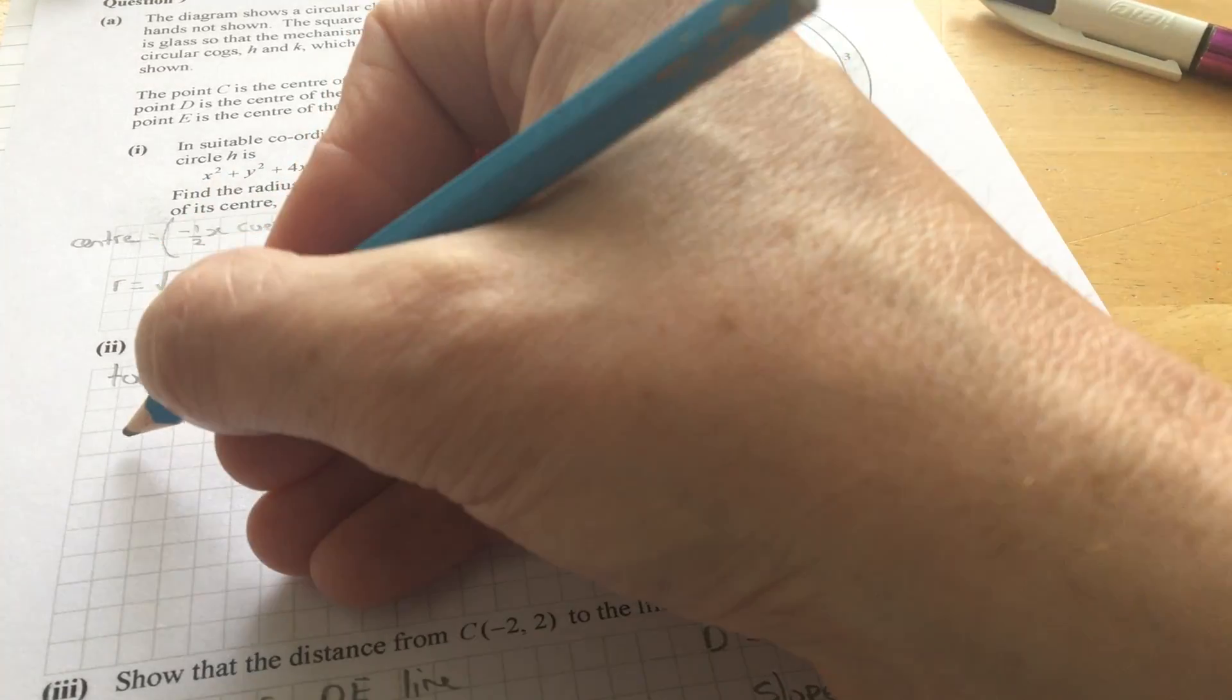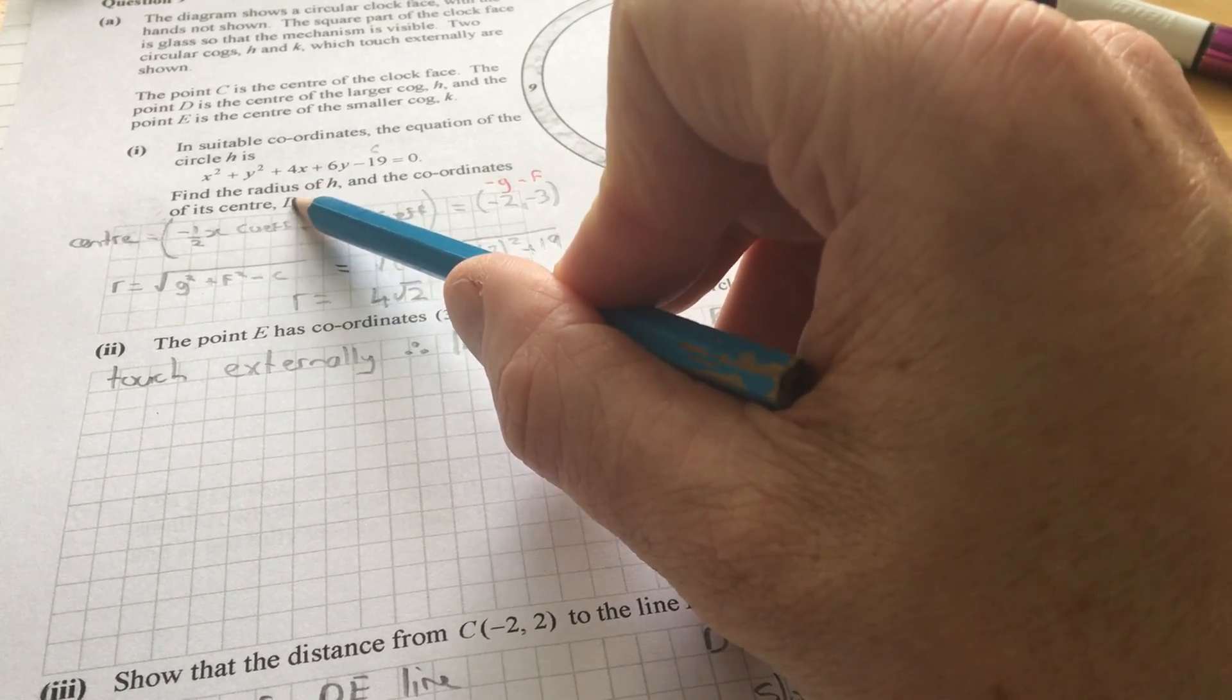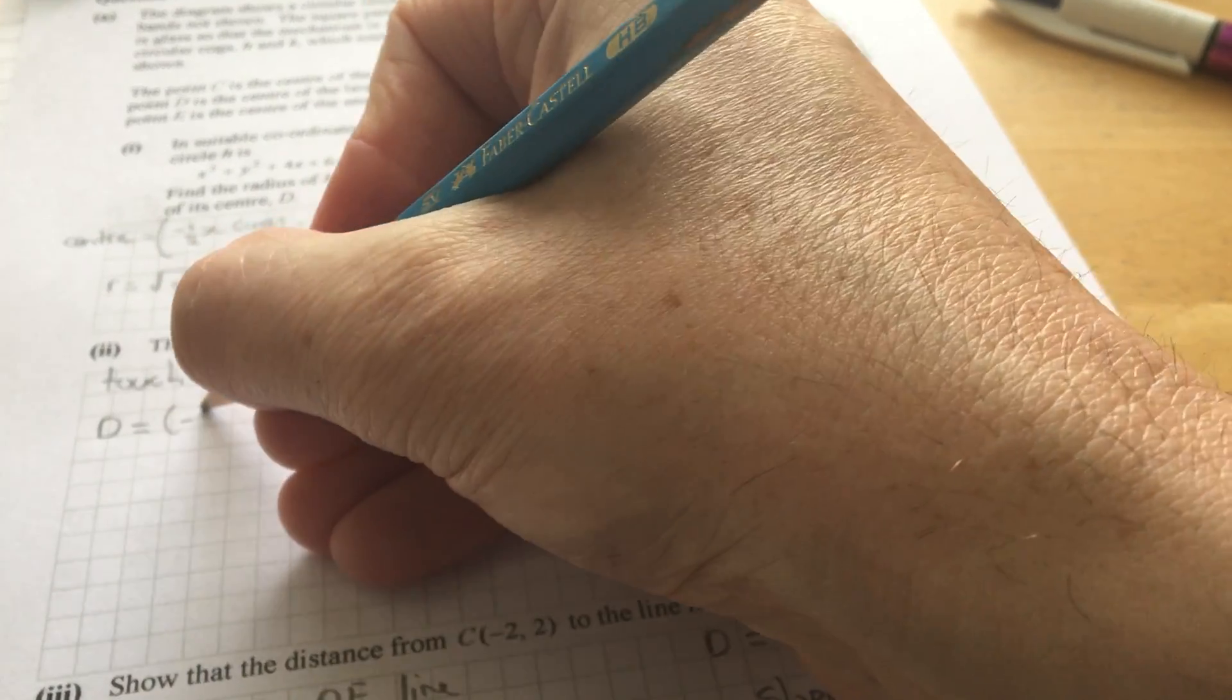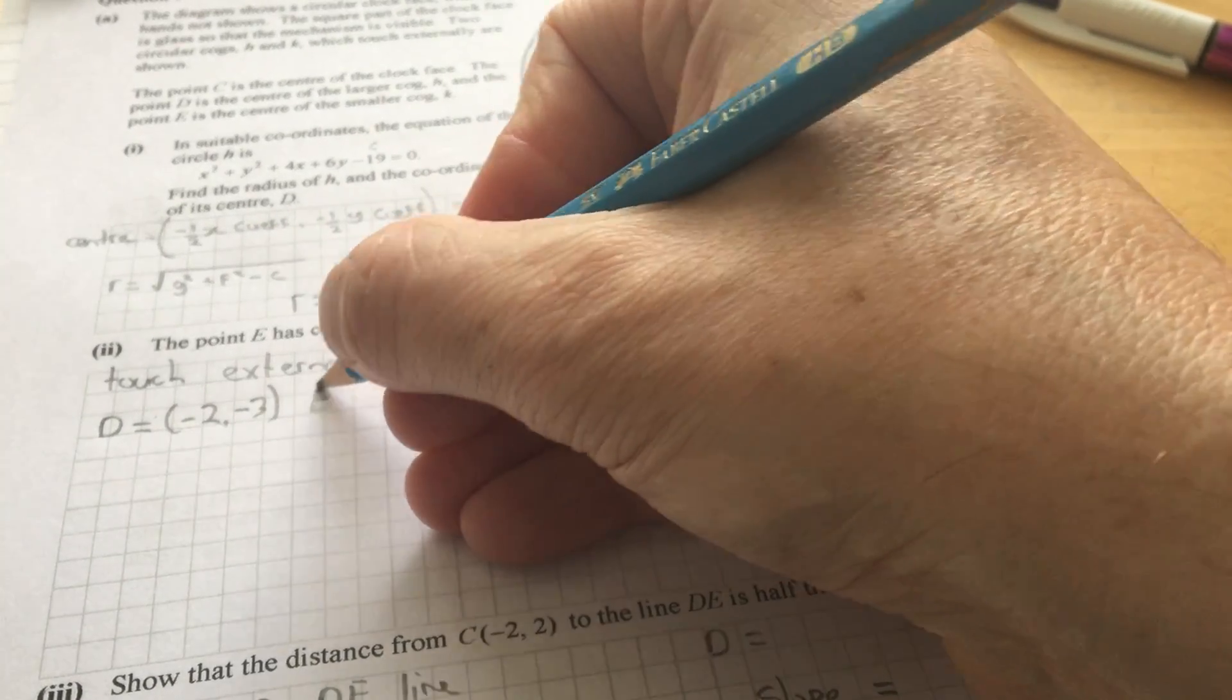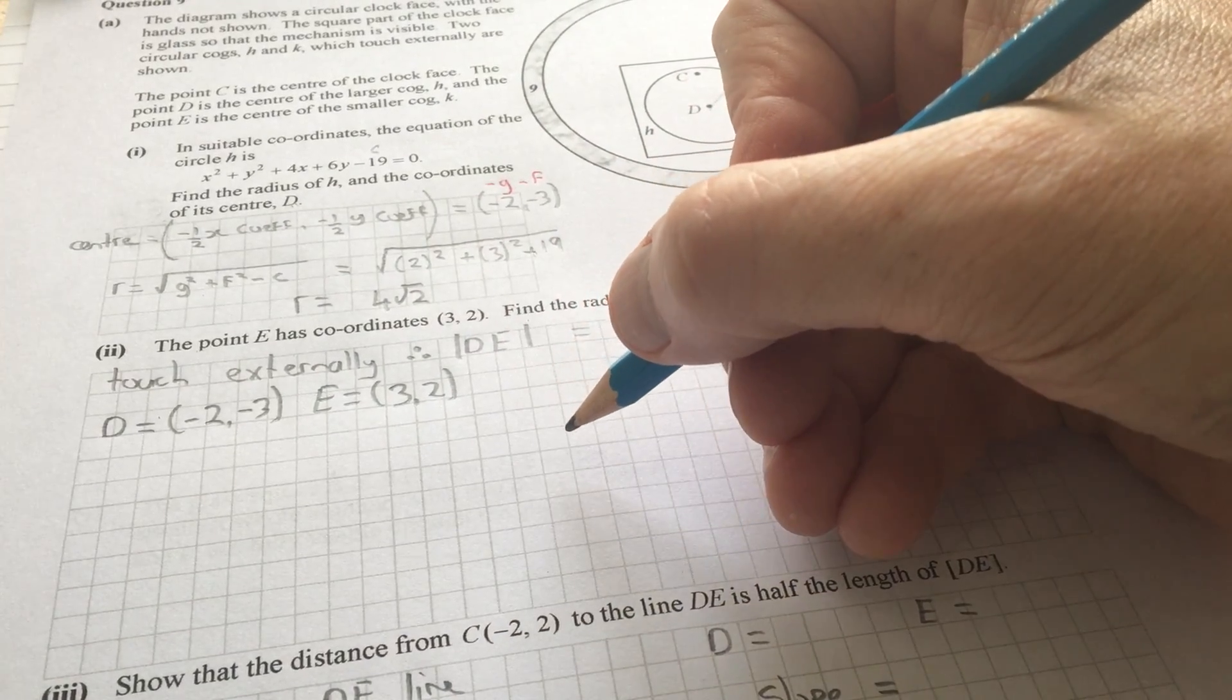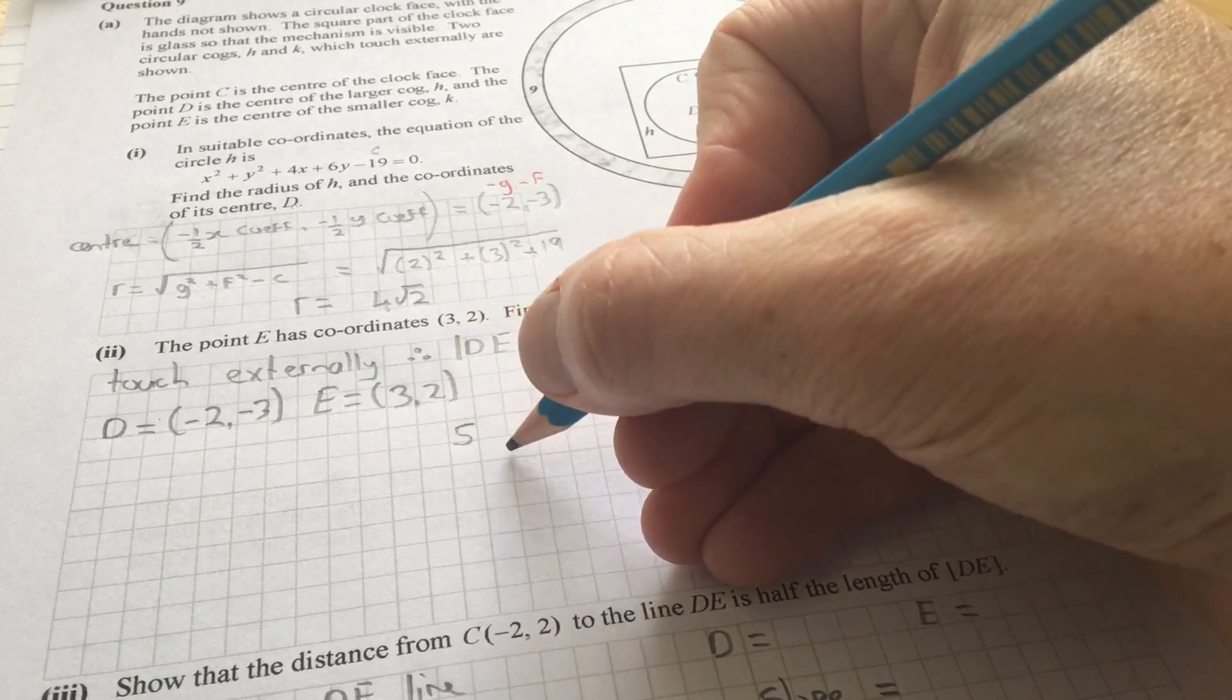So, you can just use the distance formula. So, the point D is, so find the equation of the center of the circle H. That's the point D. So, the point D is minus 2, minus 3. E has coordinates 3, 2. So, if you use the distance formula between those two points, as we said earlier, you should find that it's 5 root 2.